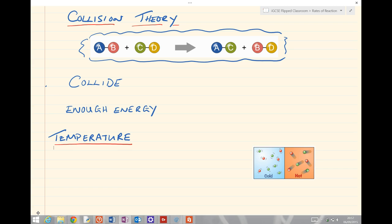We're now going to take each of these things in turn: temperature, concentration, catalyst, and surface area, and see if we can explain how the collision and energy affect that rate of reaction.